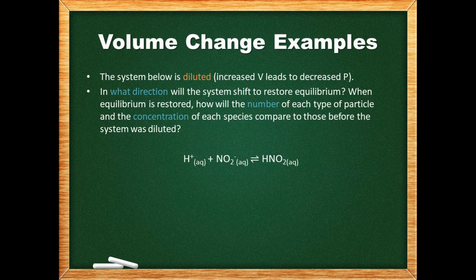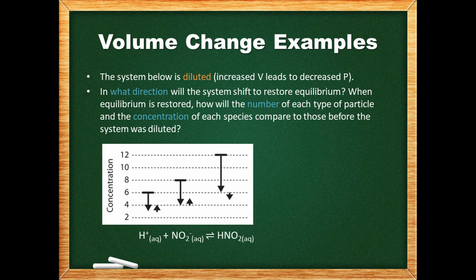To illustrate these concepts, consider the following problem: In what direction will the system shift when it is diluted? Le Chatelier's principle says that equilibrium will be restored by replacing some of the lost osmotic pressure, but not all of it. This means the system will need to shift left, as there are more aqueous particles on the left side of the equation. Be careful — the number of particles and their concentrations are two different things.